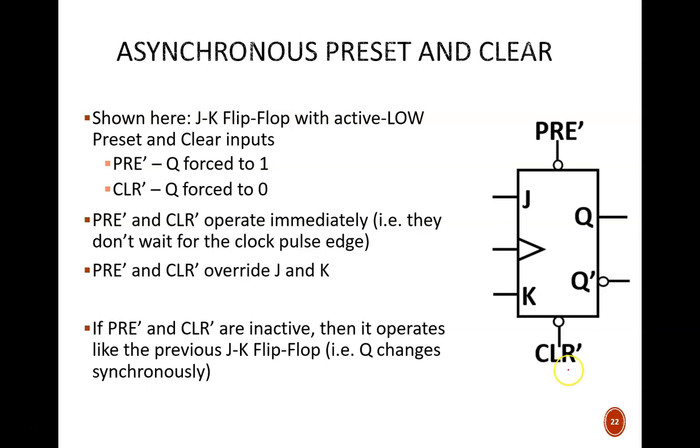As indicated by the prime next to the name and also the bubble on the port, these inputs are active low. When PRE is active with the zero signal, Q is immediately forced to one. PRE is short for preset.